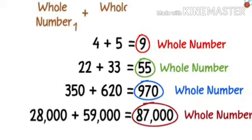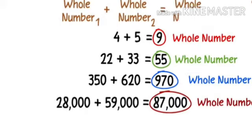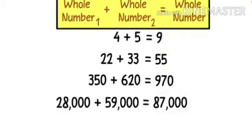Whenever we add any two whole numbers, the resultant number that we get is also a whole number. And this is the first property of a whole number.